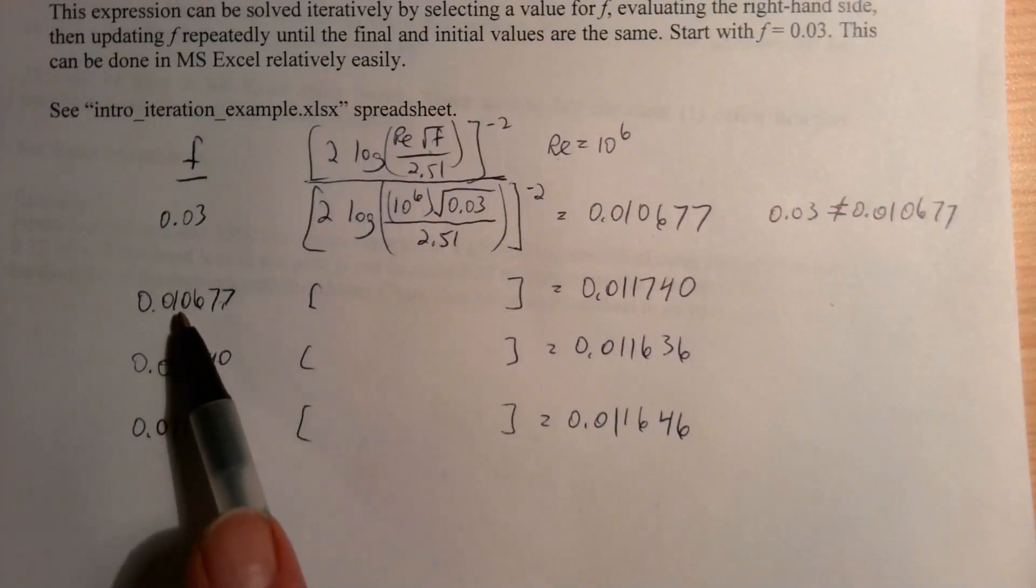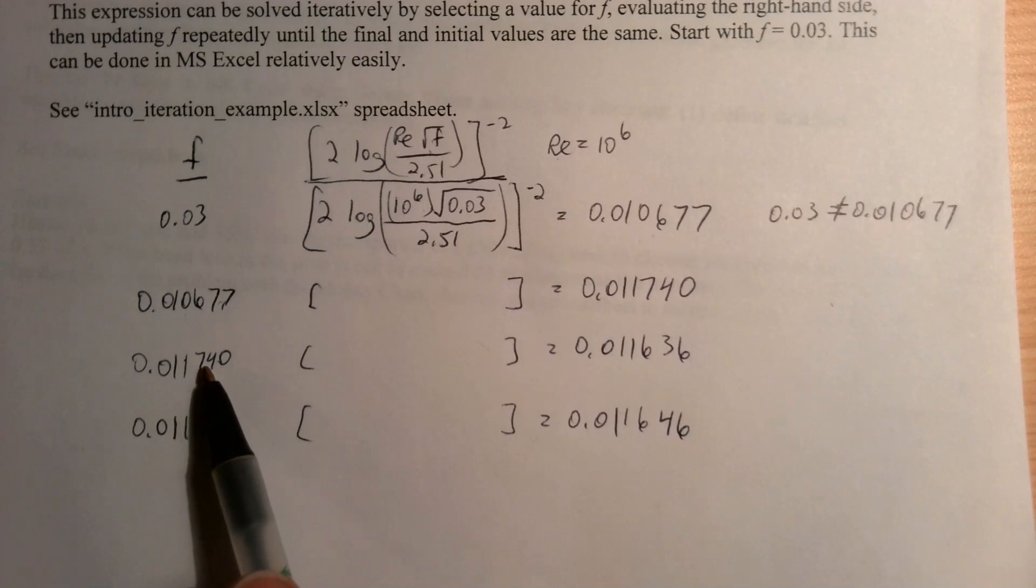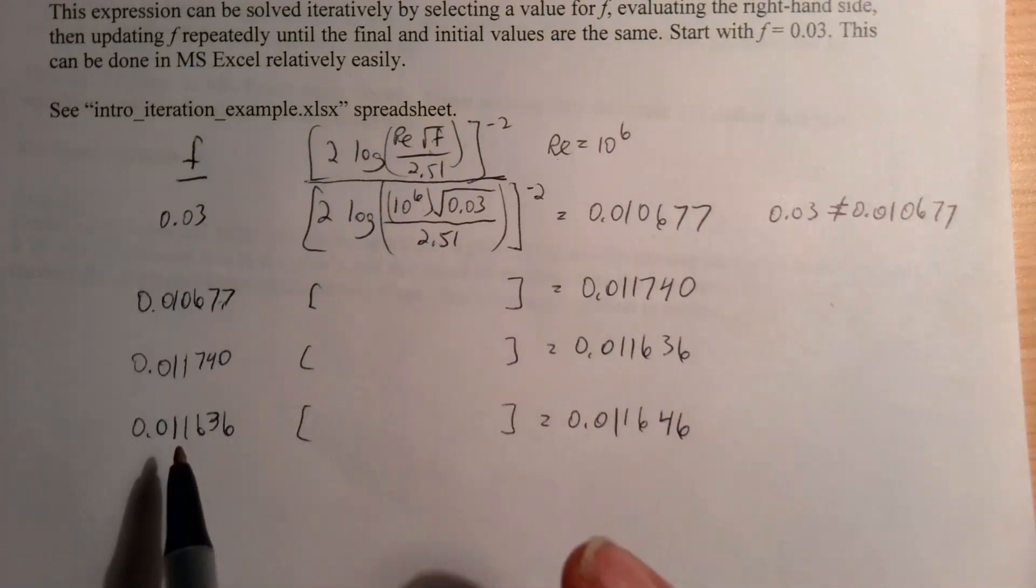And so you can see how, you know, in one guess we went from 0.03 to 0.011—we changed in the first significant figure. Then the second one, we changed in the second significant figure from 0.0106 to 0.0117. Then the third one, we changed in the next significant figure, and so we're very, very quickly getting to something that's very close to the exact solution. You can get as close as you want for a given problem this way.